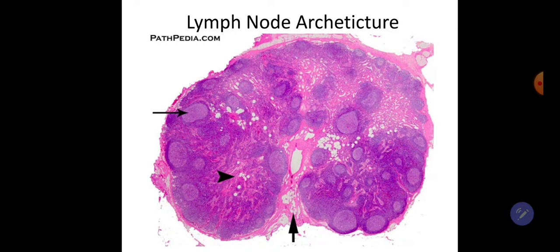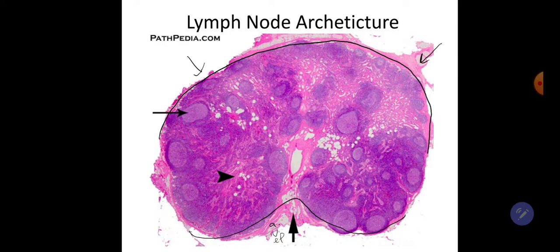Lymph node architecture. When we are looking at the lymph node, we see that it consists of two surfaces: a convex surface through which the lymph comes into the lymph node, and a concave surface containing the hilum, through which pass three structures — artery, vein, and efferent lymphatic — through which the lymph goes out of the lymph node.